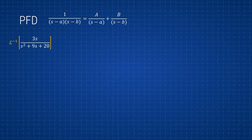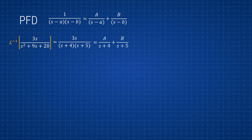Let's do another example: 3s over (s² + 9s + 20). This expression doesn't appear in the table either. We can factor the denominator into (s+4)(s+5). Since we have two multiplying terms in the denominator, we can use PFD to rewrite this as A over (s+4) plus B over (s+5), where A and B are unknown constants. Taking the inverse Laplace, that would give us A·e^(-4t) plus B·e^(-5t).